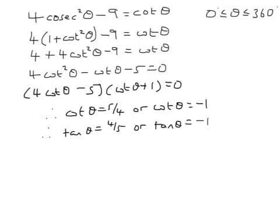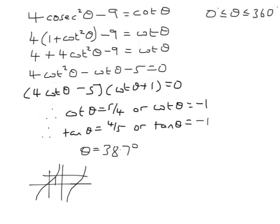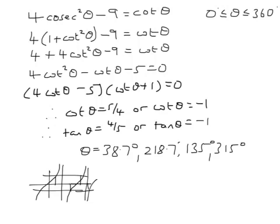Solving in the normal way, we get theta is 38.7 degrees. Because the tan graph looks like this, that gives 38.7, and 180 plus 38.7 is 218.7. The other solution in that range — adding 180 — gives 315 degrees. So we've got those 4 answers, best written as 38.7, 219, 135, and 315 degrees, all to 3 significant figures.